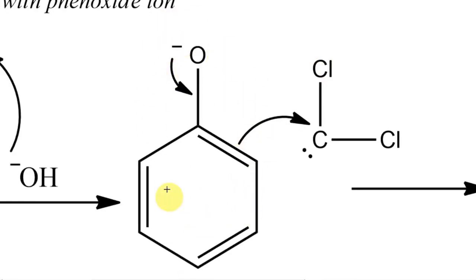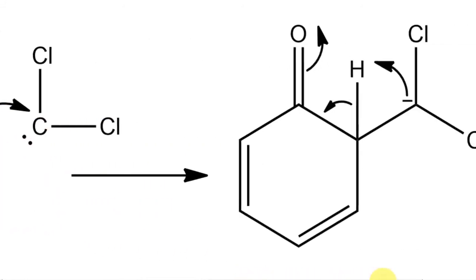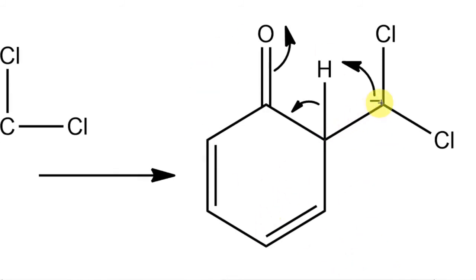The phenoxide ion is highly activated; due to the resonance effect, electron density from oxygen is imparted onto the aromatic ring, making it very reactive. The phenoxide attacks the carbene: the two electrons from oxygen form a new pi bond between oxygen and carbon of the carbene, while the pi bond in the ring breaks and a new sigma bond forms. This gives the carbon in the ring an extra electron, resulting in a negative charge on that carbon.